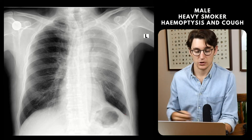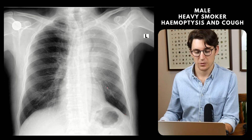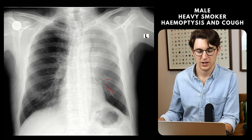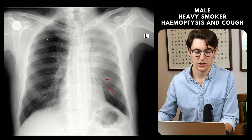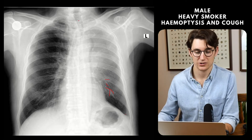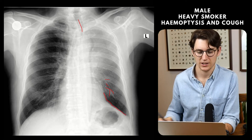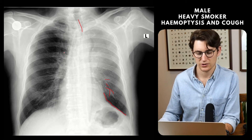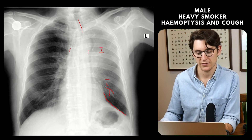The most obvious feature here is this veiling of the left hemithorax with the pulmonary vessels still visible through the opacity. There are features of left-sided volume loss with tracheal deviation to the left. There's a raised left hemidiaphragm with a juxtaphrenic peak sign, as well as rib crowding on the left-hand side and slight mediastinal shift to the left.